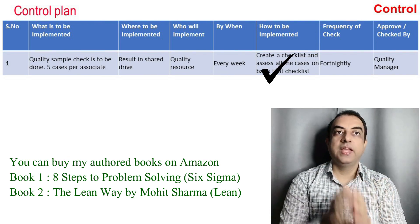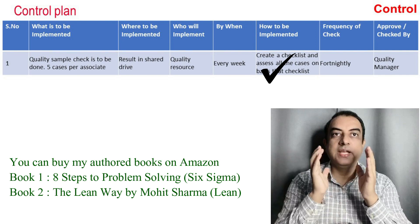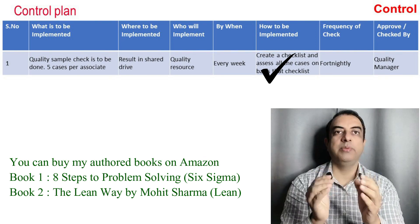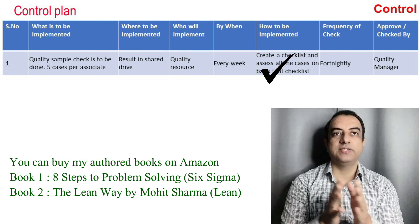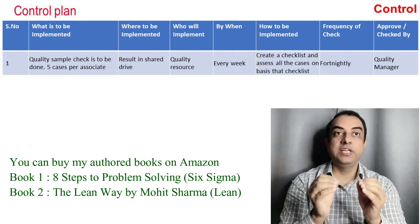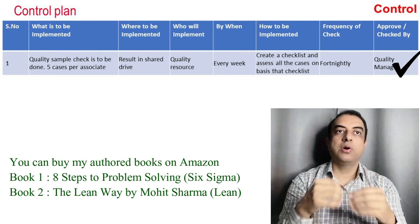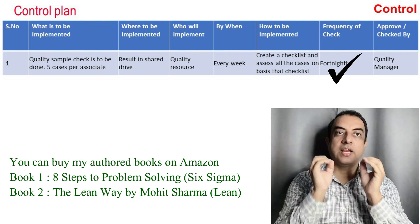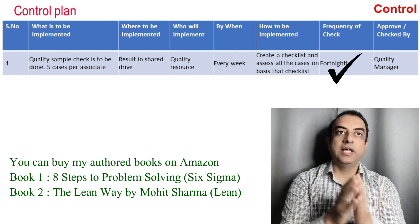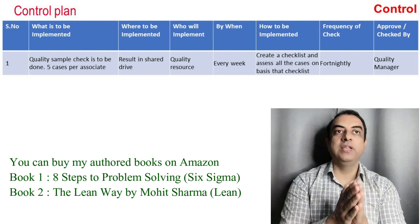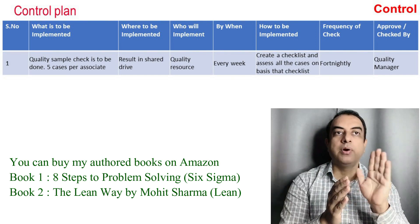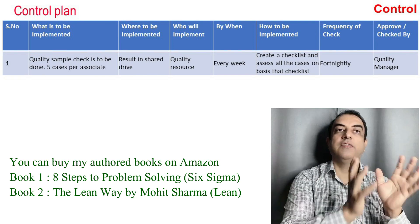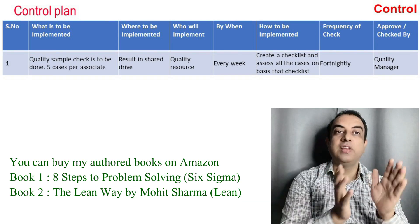The results should be shared on a shared drive; the quality resource is responsible to do the quality check, and the frequency is weekly. It is done by creating a checklist and assessing all cases on the basis of that checklist. The quality manager then checks fortnightly whether the right sample size is being monitored and whether the accuracy of the team is going up.